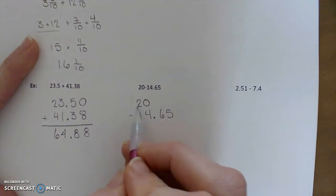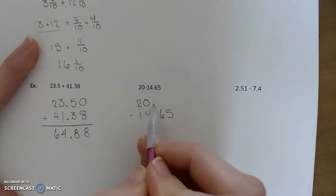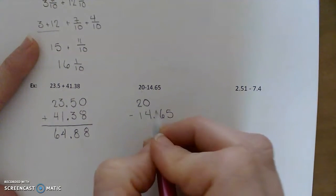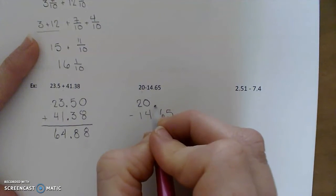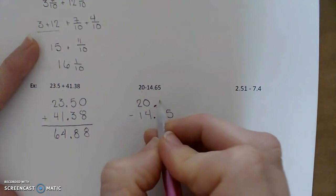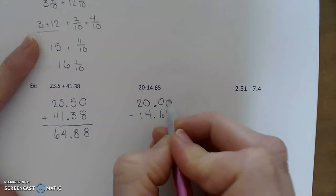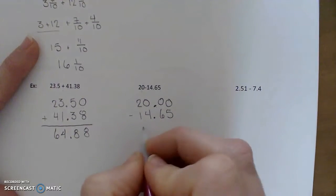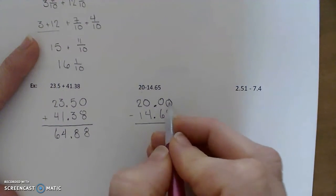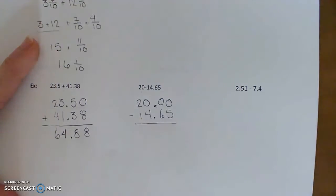This problem is strange because the first number, 20, didn't have any values after the decimal point. So you can always add in a decimal point with zeros after it, and that, again, will not change your number. So that's what I'm going to do so that all of my place values that are shown have digits.